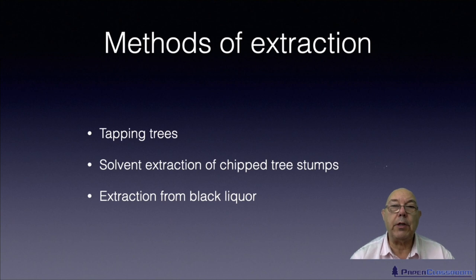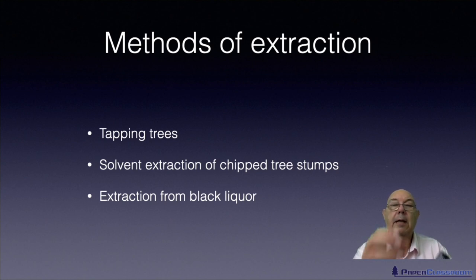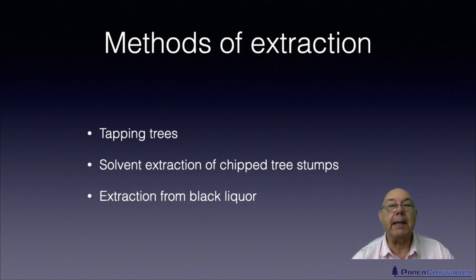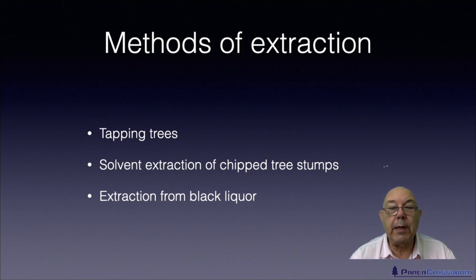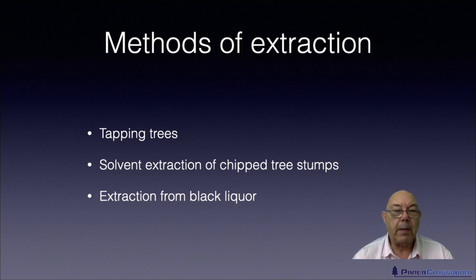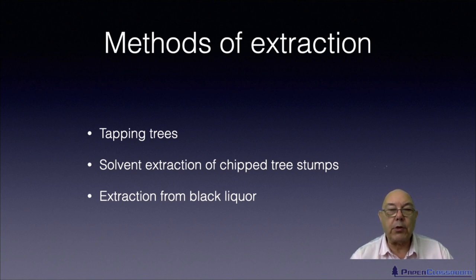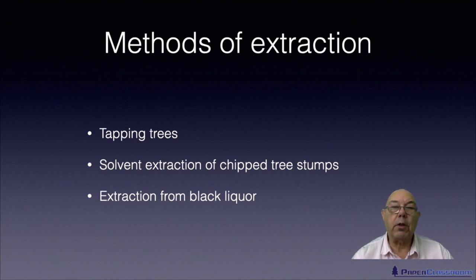The first method is tapping trees — just like they used to tap trees for rubber, particularly pine trees. You put a hole in it, put a little spout in it, wire a cup beneath it, and collect all the resin that drips out. The second way is, once you've been felling an area of trees, you're left with substantial tree stumps. These can be chipped and then solvent extracted to remove the resin. And finally, if you think about the kraft pulping process, where you are dissolving the lignin and many of the extractives — included in those extractives are the resinous materials — once you've got the black liquor, you can solvent extract the rosin before you go on to concentrate the black liquor and burn it as fuel.